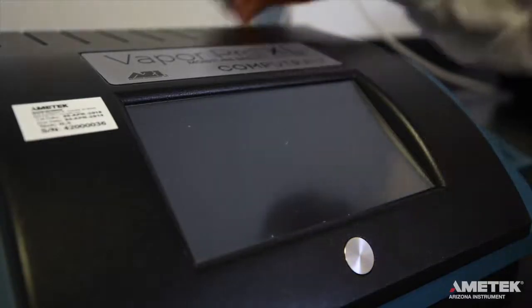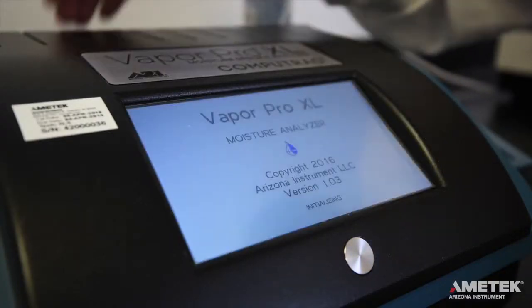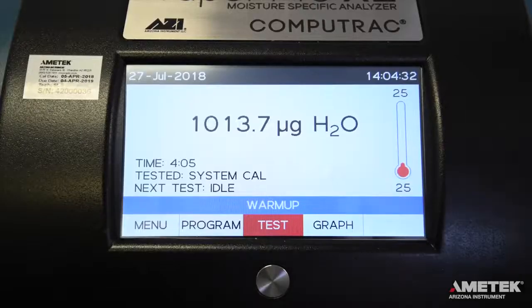When the instrument powers on, the screen will momentarily display the firmware revision number and the instrument's serial number. After the instrument boots up, the home screen will appear.